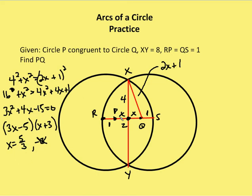Now I want to find the distance from P to Q, and P to Q is just 2X. So PQ is going to be equal to 10 thirds. All right, moving on to the second problem.